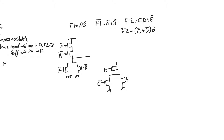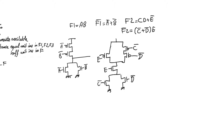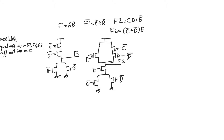In the pull-up network we have e in parallel with a branch containing c-bar and d-bar. We don't have to worry about transistor count for the bar variables because they are available without additional inverters. This gives us f1 and f2.